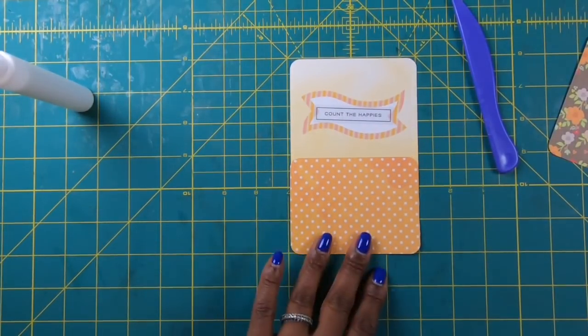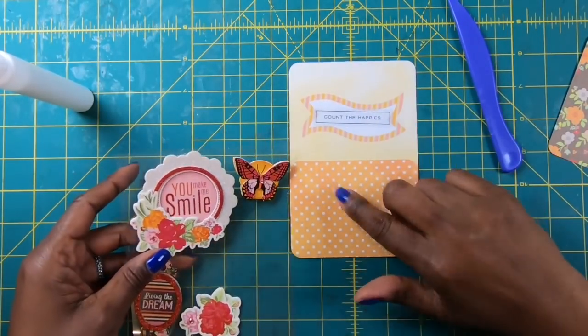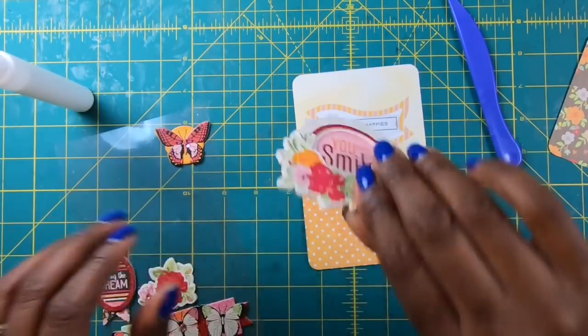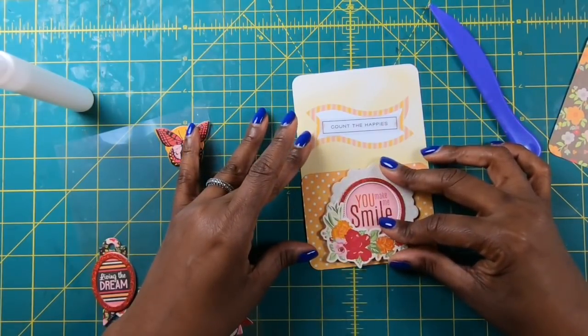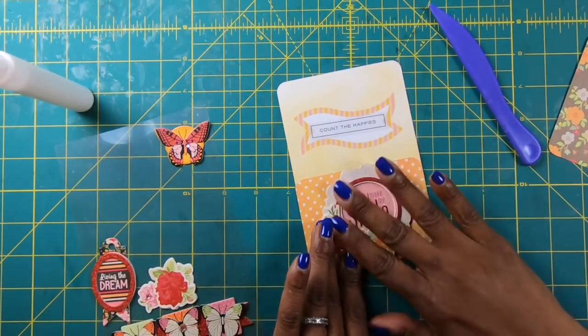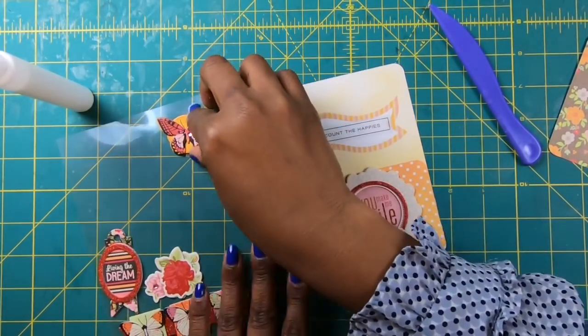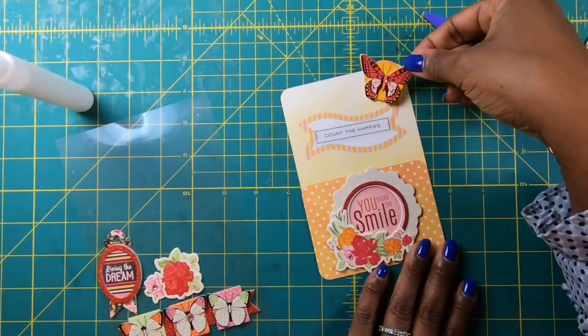Then I want to just decorate this a little bit and I have these Bow Bunny stickers that I think are perfect for this. I'm going to take this big one right here and place it, and I think that that is such a little statement maker. Oh my goodness, that is so gorgeous. And then I'm gonna pop this little butterfly right here in the corner.